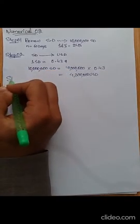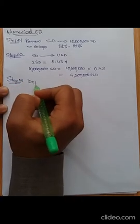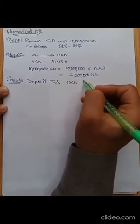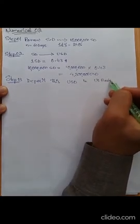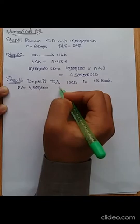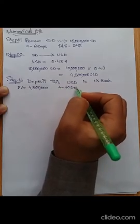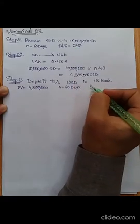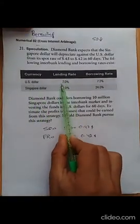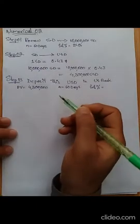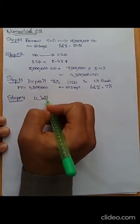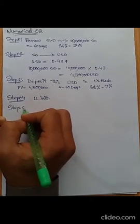In step three, we deposit this 4.3 million USD in a US bank. The present value handed over to the bank is 4.3 million USD. The deposit life matches the loan — 60 days. The lending interest rate the bank offers on USD deposits is 7%, which we are entitled to receive after the deposit period.